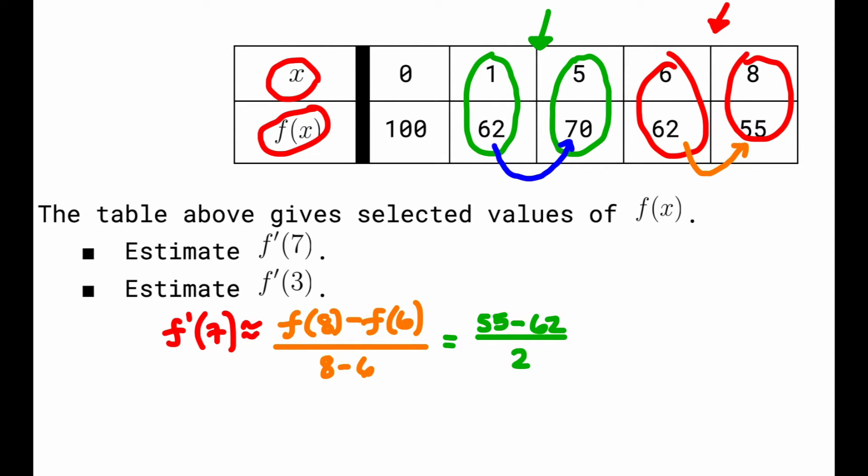You end up with something like this. If you notice at the top you get 55 minus 62, so it's going to be negative 7 over 2. Your final answer for the estimation of f'(7) would be negative 7 over 2.